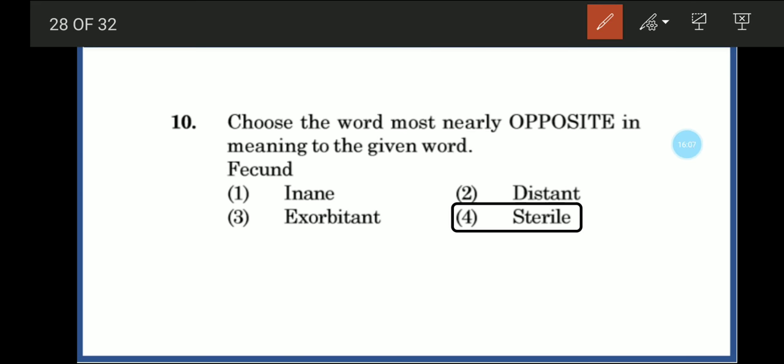Next, choose a word most nearly opposite in meaning to the given word. Fecund means fertile, productive land. Inane means foolish, exuberant means abundant, distinct means separate, and barren means infertile land. The opposite of fecund, which means fertile, is barren.